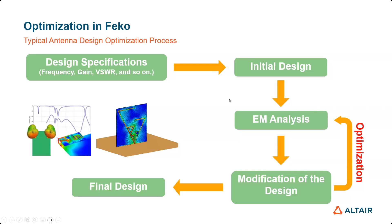Based on the design specification, we first make an initial design. To analyze the initial design, we use software or manufacturing setup. But normally, the initial design is quite difficult to satisfy the design specification, so we need to modify the initial design. EM analysis and modification of the initial design require a repetitive process, which is called optimization. Throughout the optimization process, we arrive at a final design which satisfies the design specification.